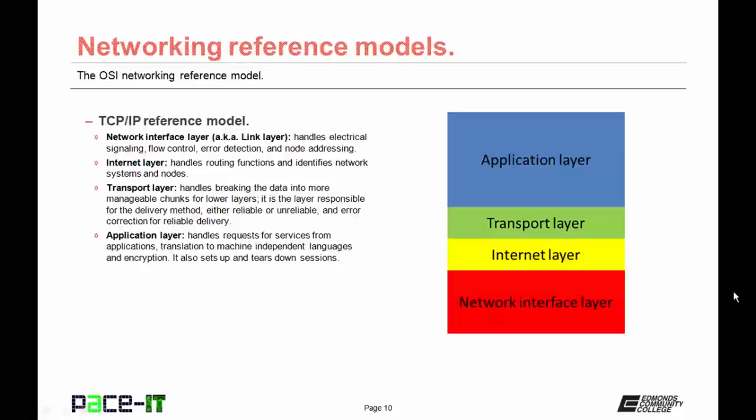The internet layer handles routing functions and identifies network systems and nodes on those networks. Then there is the transport layer, which handles breaking data into more manageable pieces for the lower layers. It is also responsible for the delivery method — which can be either reliable or unreliable — and error correction when reliable delivery is used.